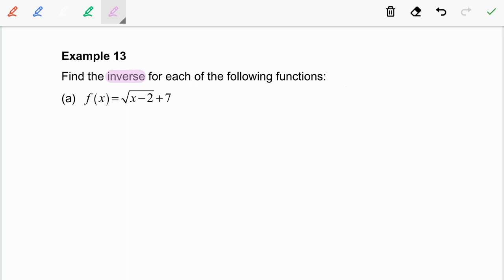Given the function f equals cube root of x minus 2 plus 7. Firstly, we are going to let f inverse equal y, so we have f of y equals x. Now, replace y into the function f.